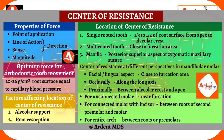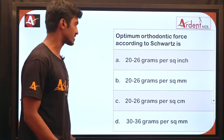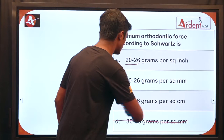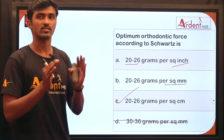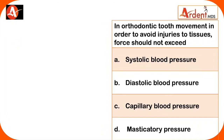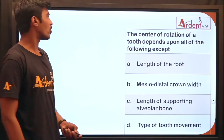Review question 1: Optimum orthodontic force according to Oppenheim and Schwartz is 20 to 26 grams per square centimeter — note the unit is square centimeter, not square millimeter or inches. Review question 2: In orthodontic movement, to avoid injury to tooth tissues, the force should never exceed the capillary blood pressure — it is not systolic, not diastolic, and there is no such thing as masticatory pressure. So the answer is capillary blood pressure.